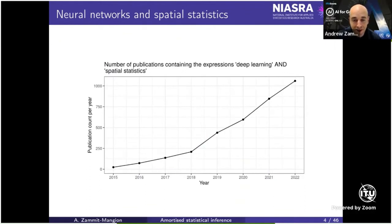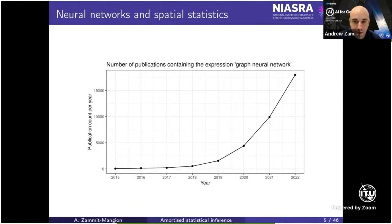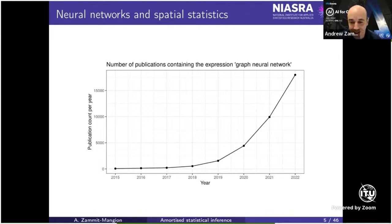This webinar series is AI for Good, so I want to talk about how neural networks are affecting our field. Looking at publications containing 'spatial statistics' and 'deep learning': ten years ago there was virtually nothing, maybe a few papers, but now we're counting around a thousand per year. Similarly for 'graph neural network' — very few ten years ago compared to now. AI is changing and affecting many fields, including statistics.